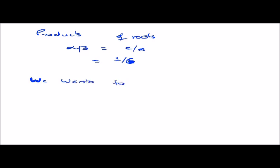We want to find alpha squared plus beta squared. That is equal to alpha plus beta, quantity squared, minus 2 alpha beta. Solve the equation and we will get the answer.